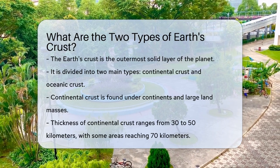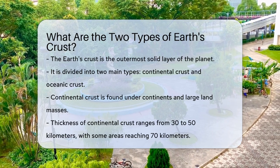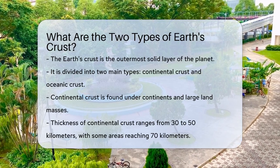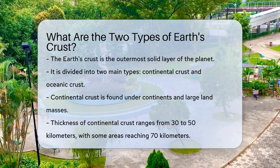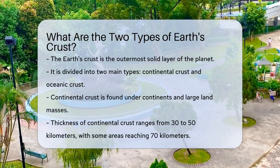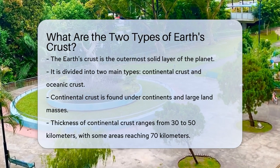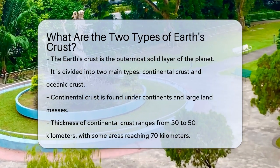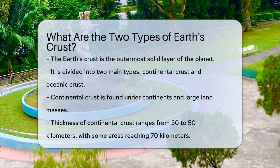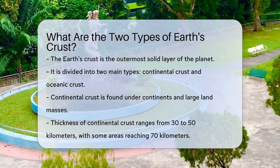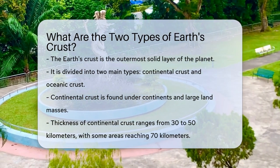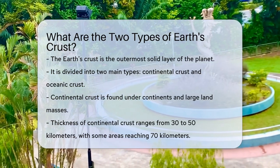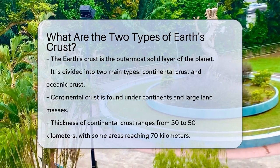First, we have the continental crust. This type of crust is found under the continents and large land masses like Greenland and Madagascar. It is significantly thicker, ranging from 30 to 50 kilometers in thickness, and in some areas it can be as thick as 70 kilometers.